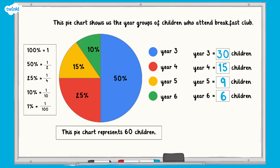Now that we have all the totals, we can double check that they add up to 60 altogether. 30 plus 15 plus 9 plus 6 equals 60. If the total came to something else, we would know that we'd made a mistake with one of our calculations.